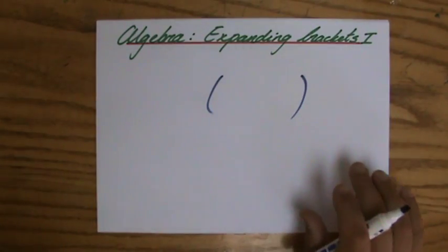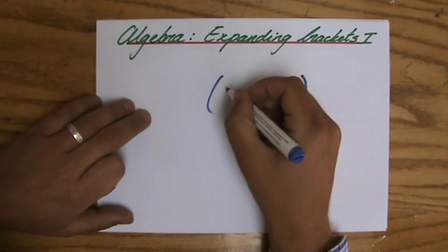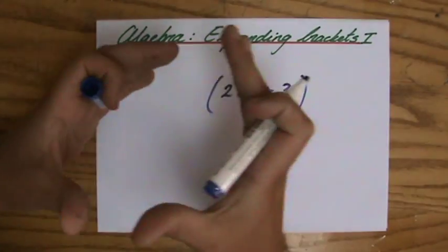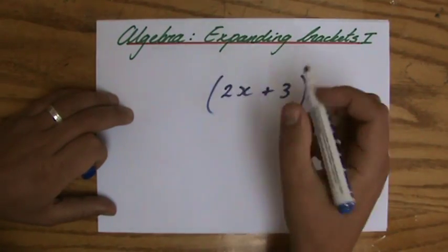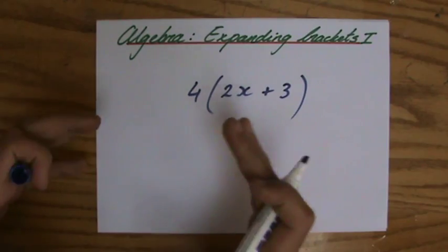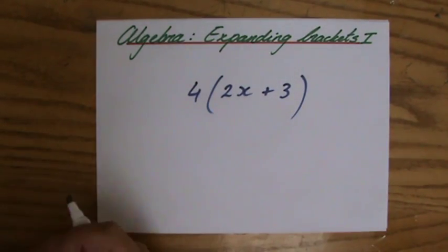So I have a pair of brackets over here. And let's say inside I have the expression, what shall we do? 2x plus 3. And then there will be a number directly in front of it. Let's do the number 4, like this. 4, opening bracket, 2x plus 3, closing bracket.